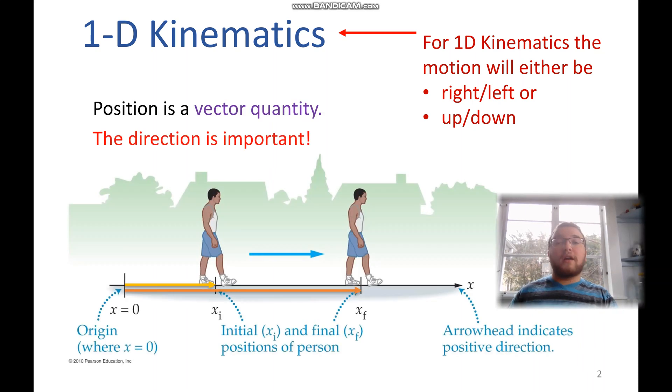Position is a vector quantity. This means that direction matters. When we start at one position and end at another, we have an arrow to indicate which direction we were traveling or the positive direction.